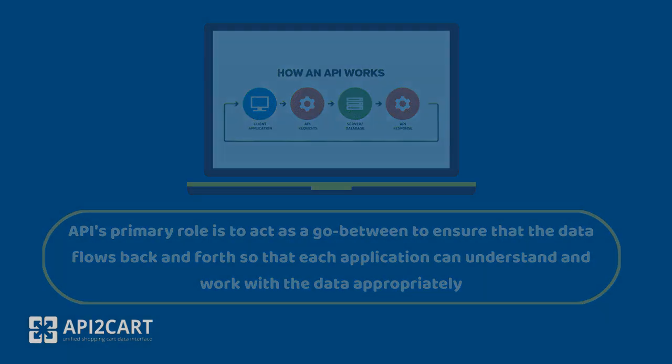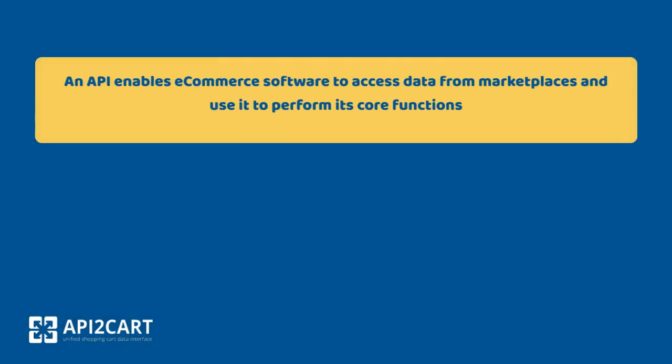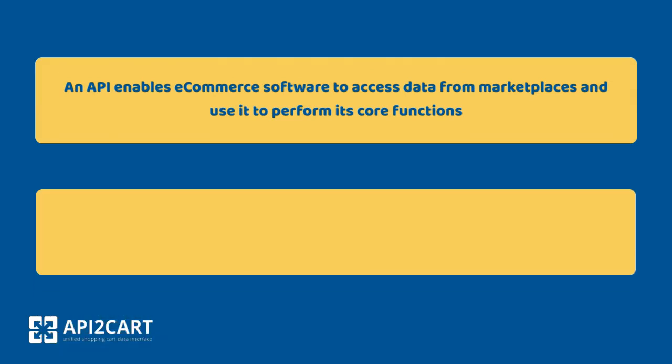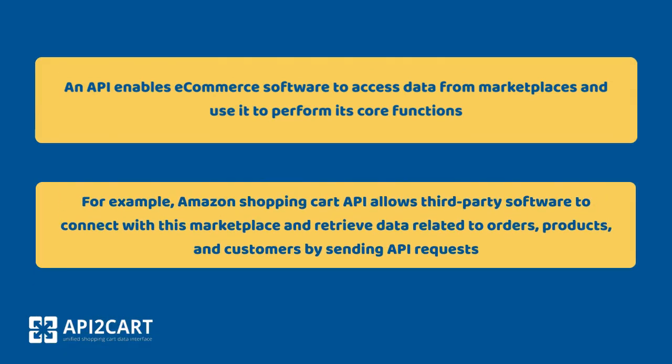An API enables e-commerce software to access data from marketplaces and use it to perform its core functions. For example, Amazon Shopping Cart API allows third-party software to connect with this marketplace and retrieve data related to orders, products, and customers by sending API requests.